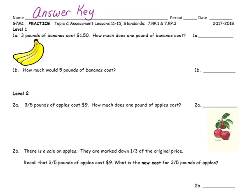Three pounds of bananas cost $1.50. How much does one pound cost? Since you want one pound, the pounds will go in the denominator and the cost will go in the numerator. So we have $1.50 divided by 3.